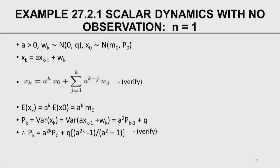Against this, I am now going to describe a couple of simple examples to illustrate the dynamics. First, I am going to talk about scalar dynamics with no observation — that means this is called stochastic dynamics. Let A be a scalar positive, W_K be a scalar Gaussian random variable with mean 0 and variance Q. Q is the variance, and X naught is M naught, P naught. The dynamics is given by a simple scalar linear dynamics: X_K is equal to A times X_{K-1} plus W_K.